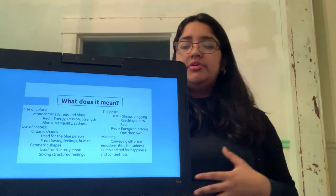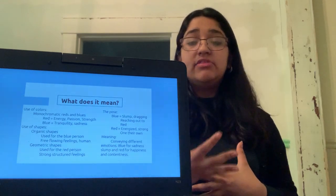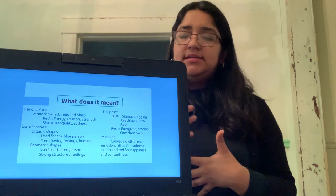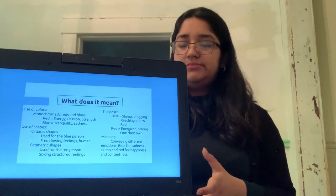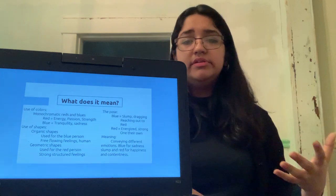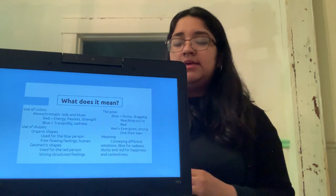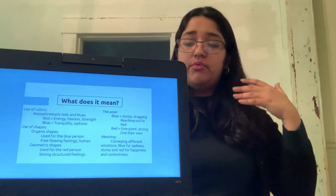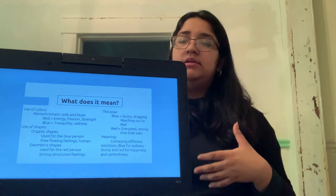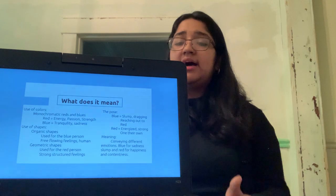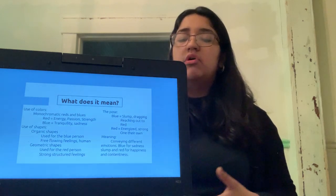I use monochromatic reds and blues. The red symbolize more as a passionate, energetic and strong feeling while the blue conveys more as a sad and weak feeling. I used organic shapes on the blue person to depict more free flowing feelings or just flowy feelings and geometric for the red to depict more strong and energized feelings. The blue is posed in a more weak, tired position, but still reaching out to the red while the red is more energized and strong on their own.